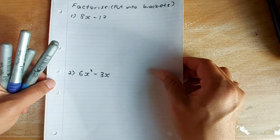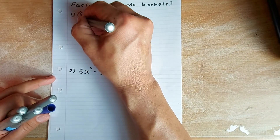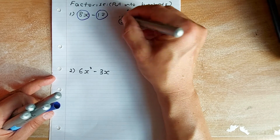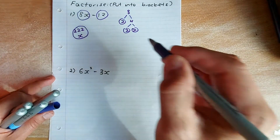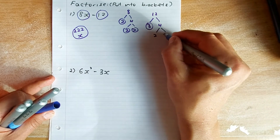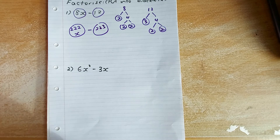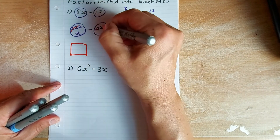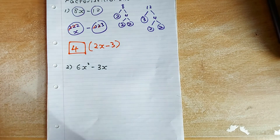Now we're going to do factorize. Factorize means to put into brackets — it's the reverse of expanding. I'll break numbers into bubbles: 8 is made up of 2 times 2 times 2, and x. For 12, it's made up of 2 times 2 times 3. Take out the common factor: 2 and 2 are common, so 2 times 2 is 4. What's left is 2x in the bracket, and minus 3 in the other. That's another mark.